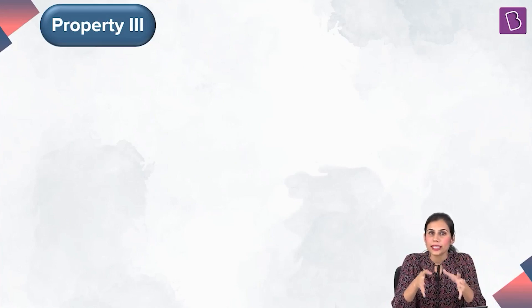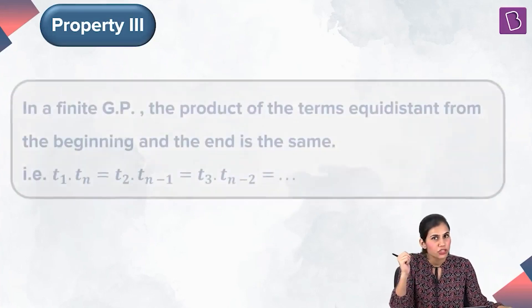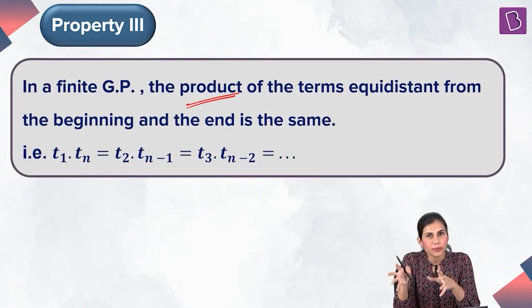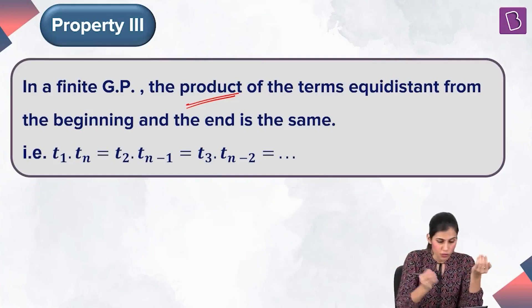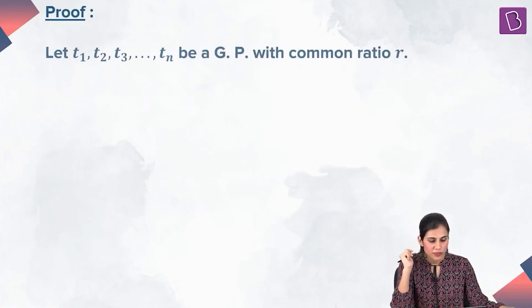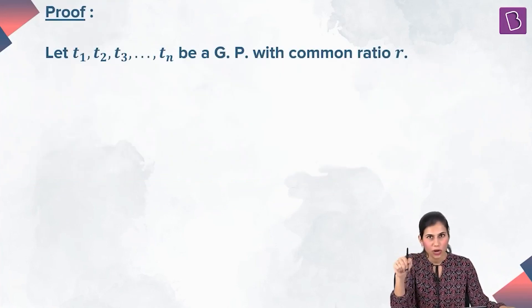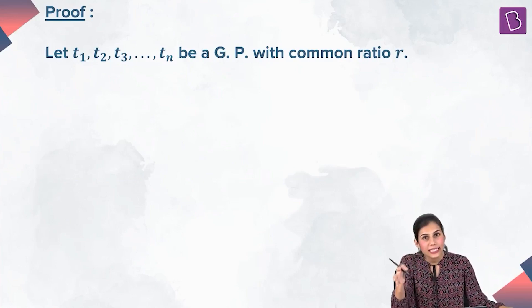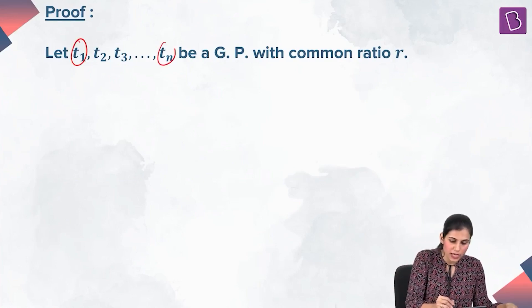Let me jog your memories back to the property of AP which said that in a finite AP, the sum of terms equidistant from the beginning and from the end is the same — equal to the sum of the first and the last term. On the same lines, property three for GP says that in a finite GP, the product of terms equidistant from the beginning and from the end is the same — equal to the product of the first and the last term. Let's quickly prove this.